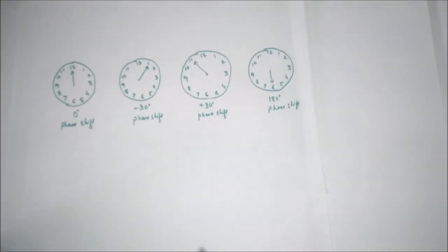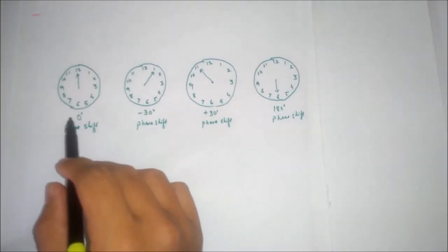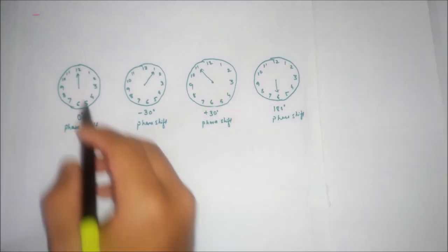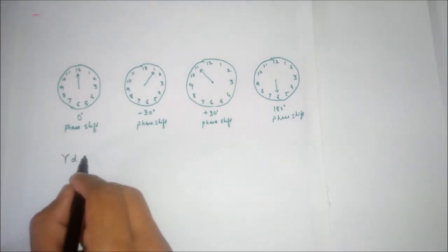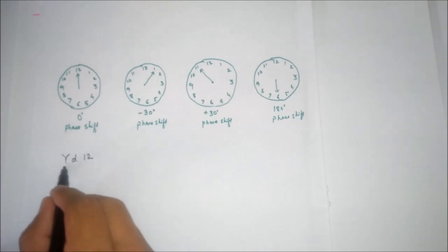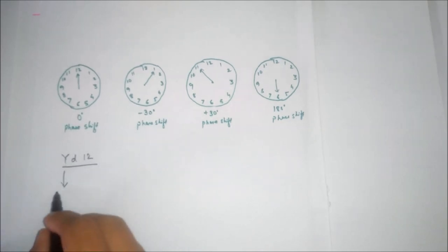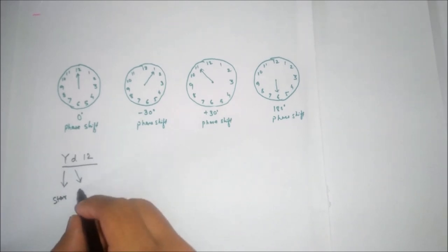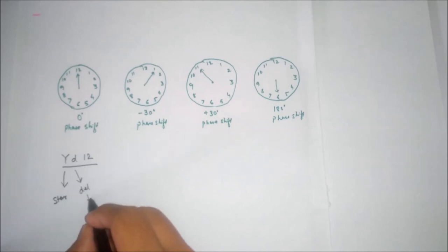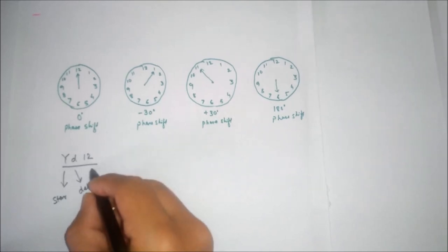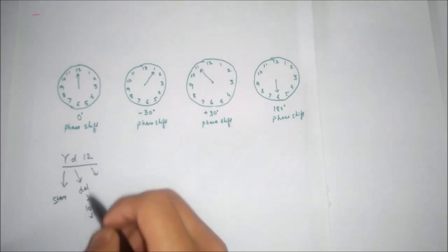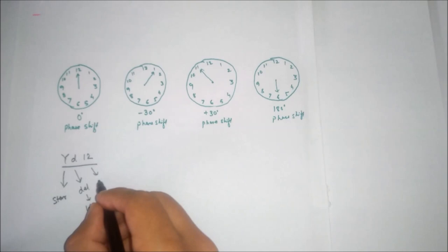इसको याद रखने के लिए एक clock जैसा diagram draw किया है। For example YD12 — Y means high voltage star connection, D means delta connection और वो low voltage है, और 12 means phase displacement 0 degree है।